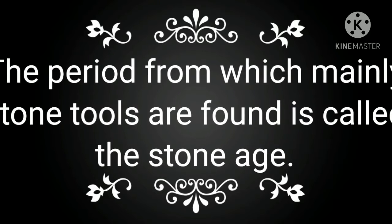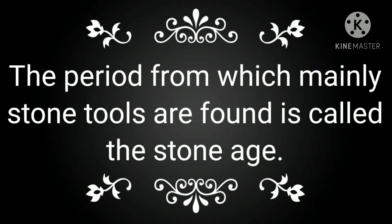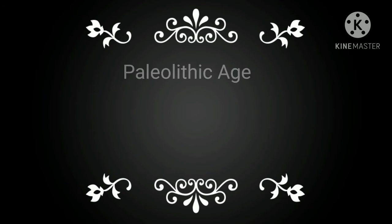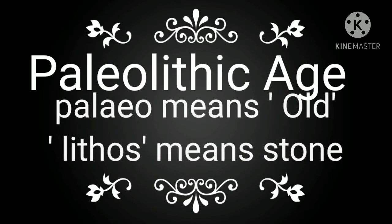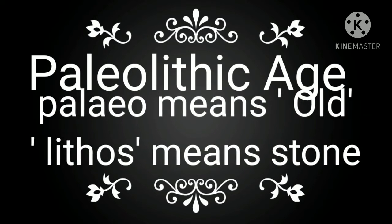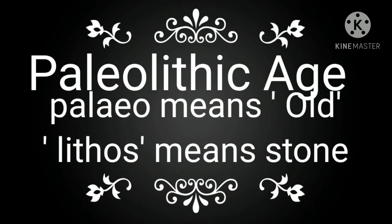The period from which mainly stone tools are found is called the Stone Age. The Stone Age is divided into 3 periods on the basis of the shape and the type of tools found. Now let us learn about the Old Stone Age, or Paleolithic Age.